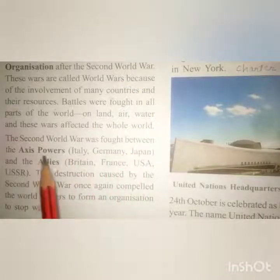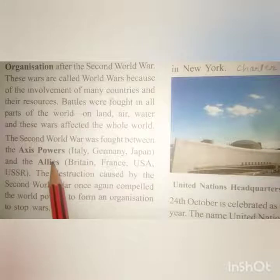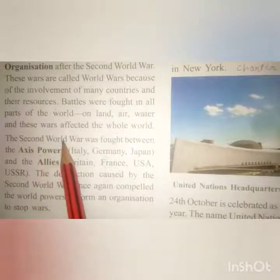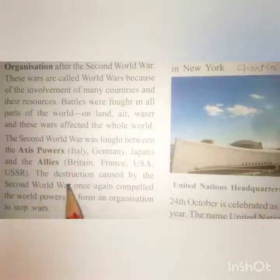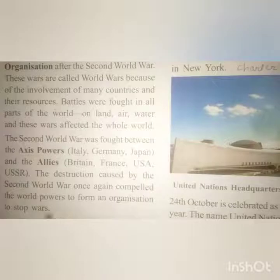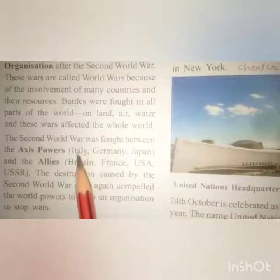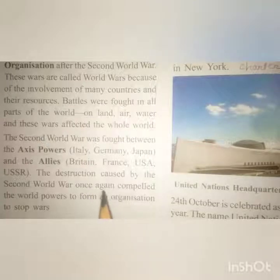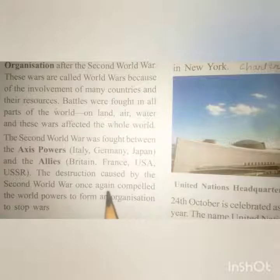The Second World War was fought between the Axis Powers and the Allies. The Axis Powers included Italy, Germany, and Japan, while the Allies included Britain, France, USA, and USSR. This second world war caused huge destruction, which compelled the world powers to form an organization to stop wars, and so the United Nations Organization came into existence.